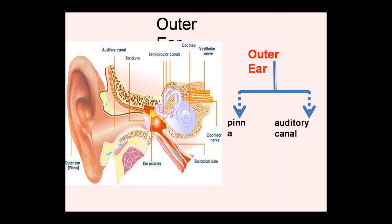Firstly, the sound wave reaches the ear closer to the sound slightly earlier than it reaches the other ear. Secondly, the sound is less intense when it reaches the second ear because the head acts as a sound barrier, partially disrupting the spreading of the sound waves.